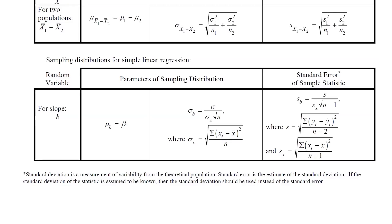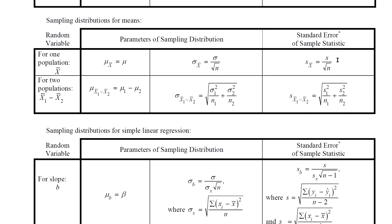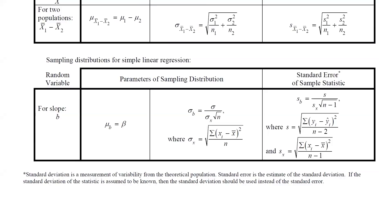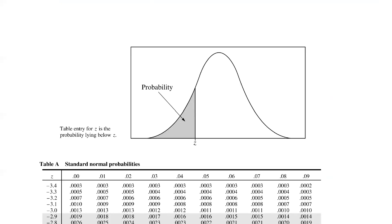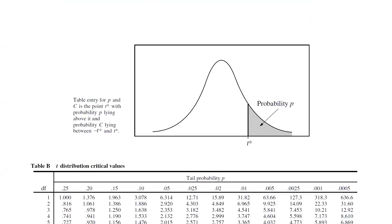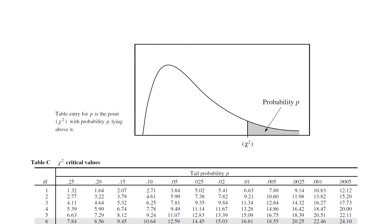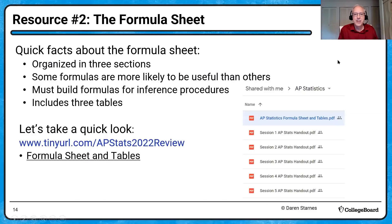That covers all the formulas. At the very bottom there's a note about comparing two proportions with an asterisk in the table for special cases on the standard error, particularly when doing inference about a difference between two proportions. We also have three tables: Table A of standard normal probabilities, which is two pages; Table B of t-distribution critical values, which gives the right tail area unlike Table A which gives the left tail area; and Table C of chi-square critical values. That concludes our tour of the formula sheet.